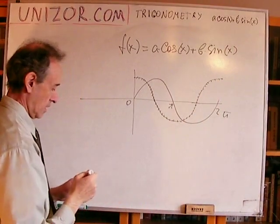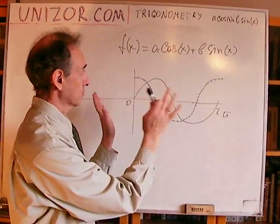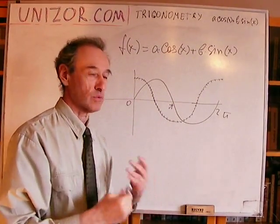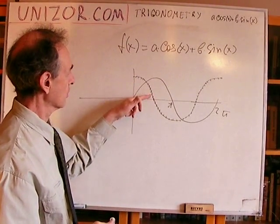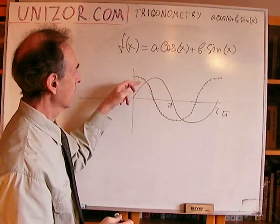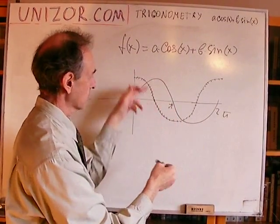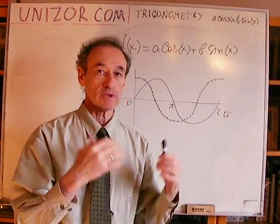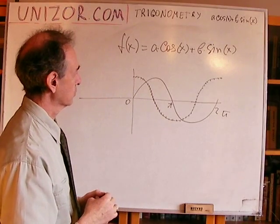Now, the linear combination of them, just from looking at the formula, you cannot really predict the behavior of this. One function is going down, another is going up. At this point, they are going both down. I mean, it's really not obvious how the whole behavior of the function would pan out.